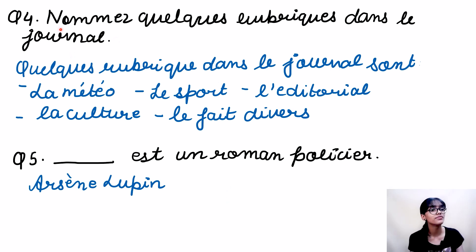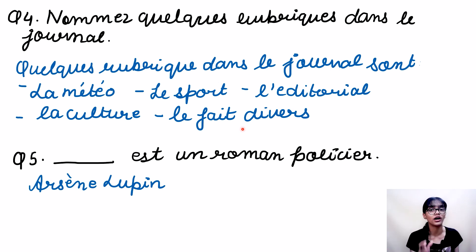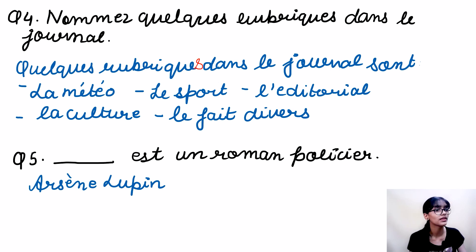Fourth — again an important question: Name a few sections of the newspaper. This is given on page 37 of your textbook in a box towards the side. All the sections of the newspaper are given there. Just learn around three to four of them and you can write. Quelques rubriques dans les journaux: la météo, le sport, les éditoriaux, la culture, les fêtes d'hiver, etc.